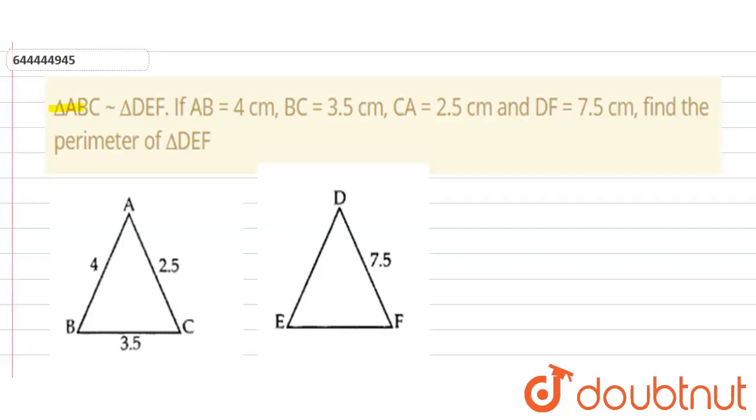The question is triangle ABC is similar to triangle DEF. If AB is equal to 4 cm, BC is equal to 3.5 cm, CA is equal to 2.5 cm and DF is equal to 7.5 cm, find the perimeter of triangle DEF.